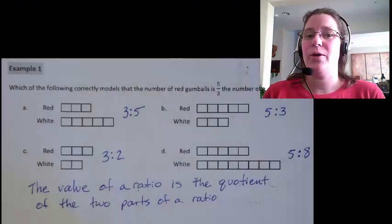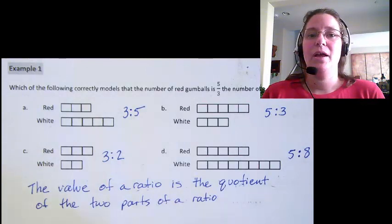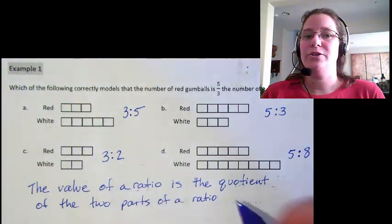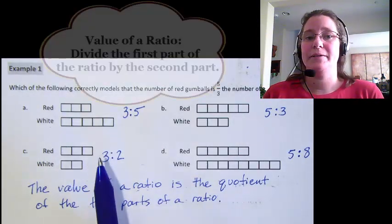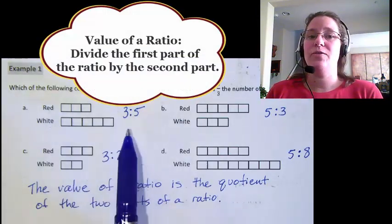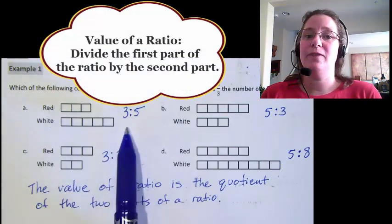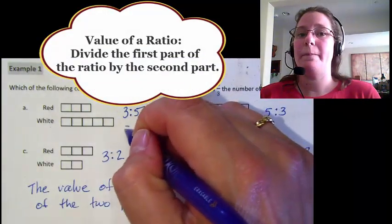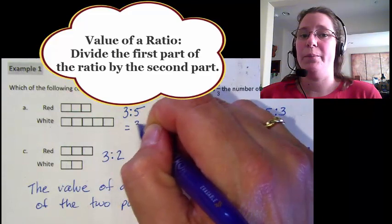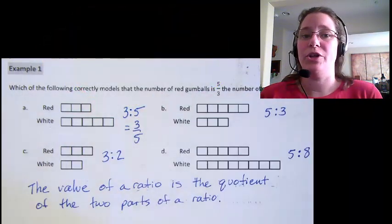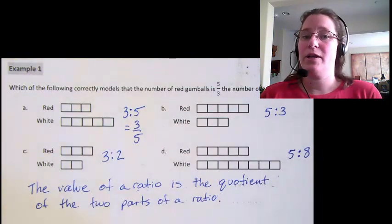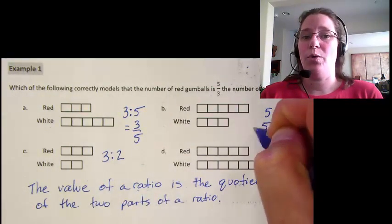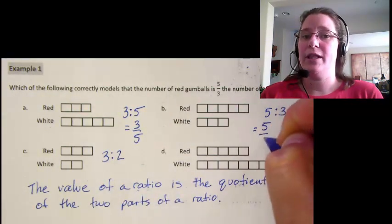Now you know how to find the value of a ratio. Be sure you really understand this process — it's important for what we're going to be doing next. Remember, to find the value of a ratio, you divide the first part of the ratio by the second part. If you change the order of the ratio, it changes the value of the ratio. Take a look at the video again, do your homework, and I'll see you in class tomorrow.